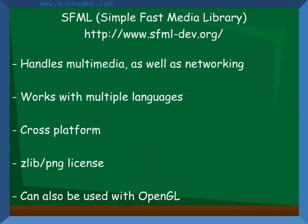SFML, or the Simple and Fast Media Library, is an API that is gaining popularity. In general, it handles the same things as Allegro, works with multiple languages, and it also has a networking layer as well. SFML uses the Zlib PNG license.